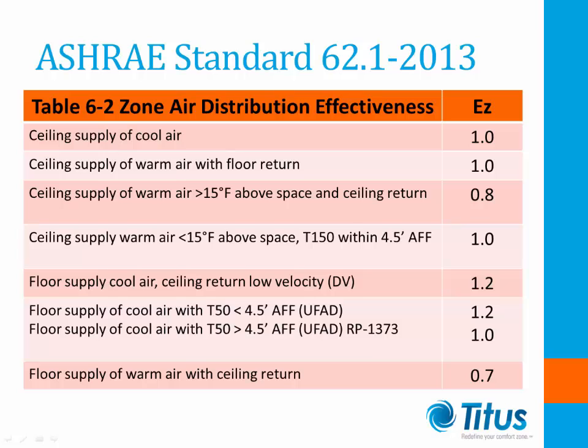Now let's look at ASHRAE Standard 62.1. Standard 62.1 prescribes the volume in CFM of outdoor air that must be delivered to each space depending on the space duty and occupant density. Table 6-1 defines the base ventilation air requirements for more than 75 different occupancy categories in buildings. The total ventilation CFM is calculated by adding the CFM per square foot of building space to the prescribed CFM per occupant. This base number is then divided by the EZ factor, which is dependent on the type of condition and the system in use.